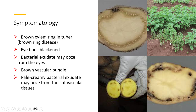In the field, you can see the symptoms like this. And in the tubers, mainly rotting, blackening, and browning of the vasculature can be seen.